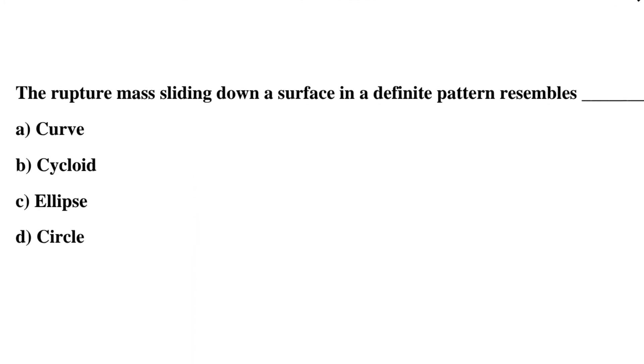Next question: the ruptured mass sliding down a surface in a definite pattern resembles — Option A: curve, Option B: cycloid, Option C: ellipse, Option D: circle. The correct answer is Option B, cycloid.